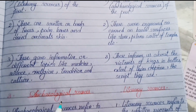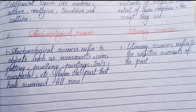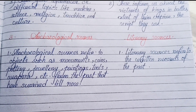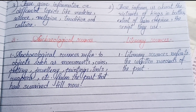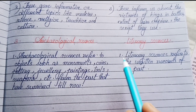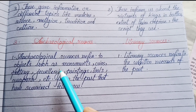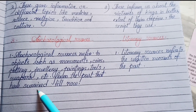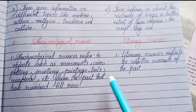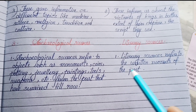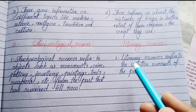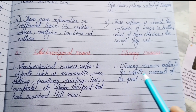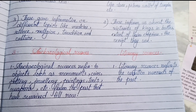Number three: difference between archaeological sources and literary sources. Archaeological sources refer to objects such as monuments, coins, pottery, jewelry, paintings, tools, weapons, etc. from the past that have survived till now. Literary sources refer to the written records of the past.